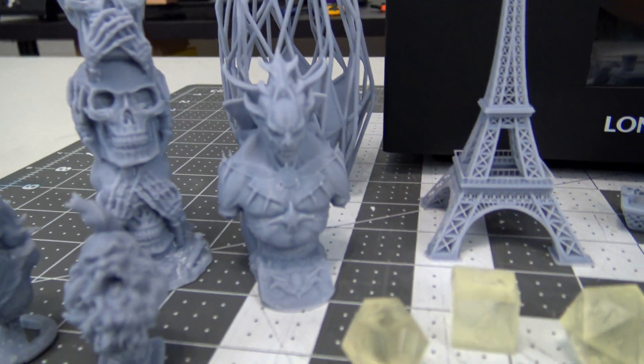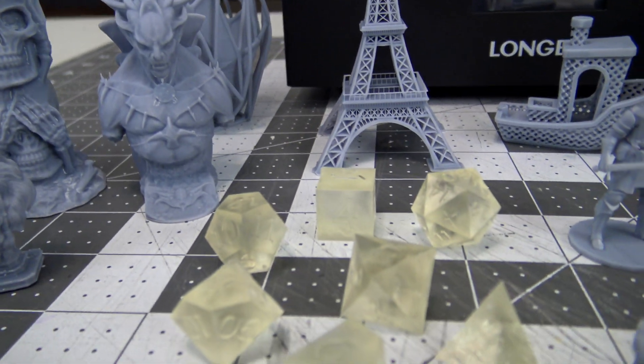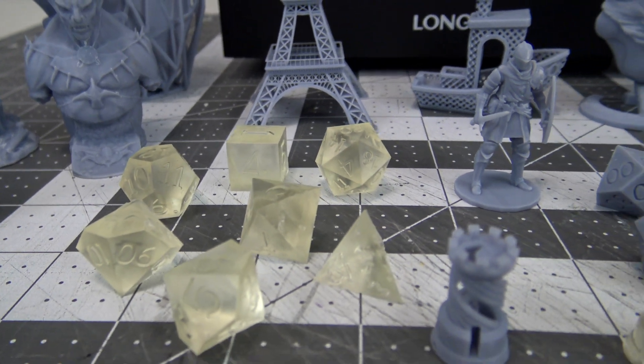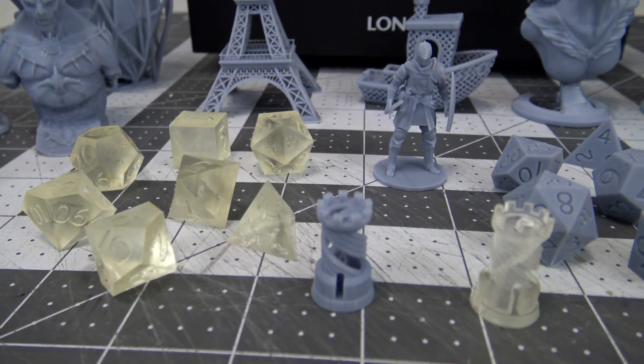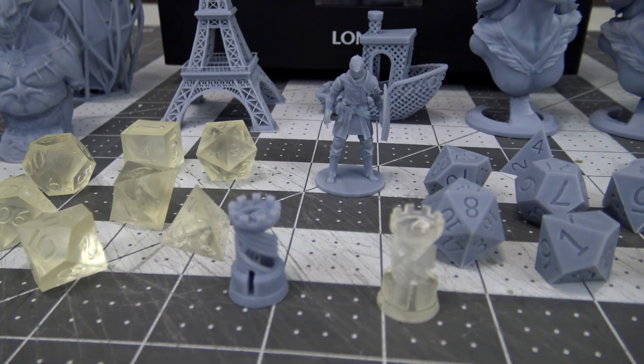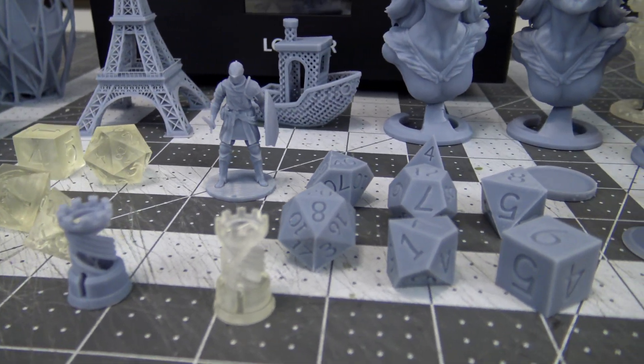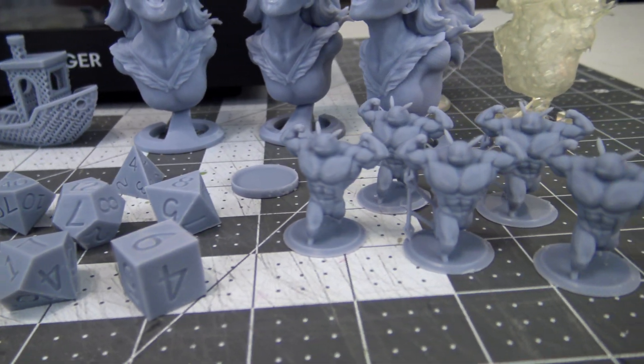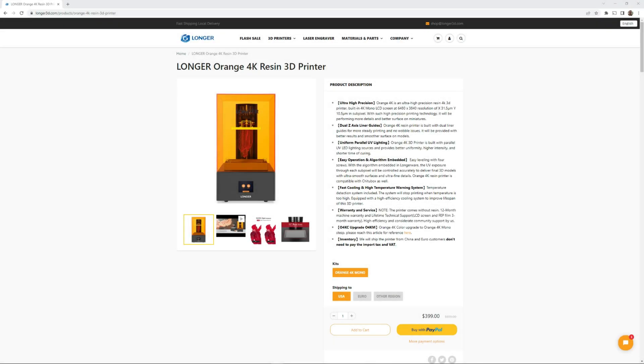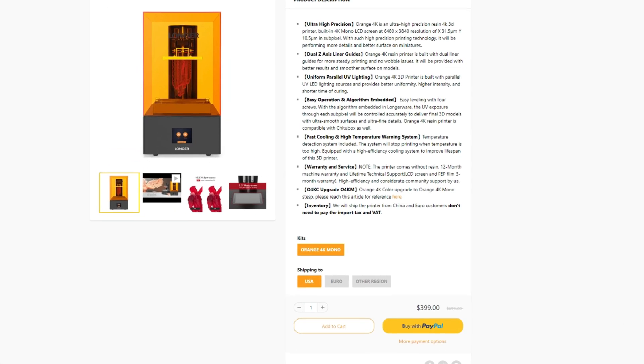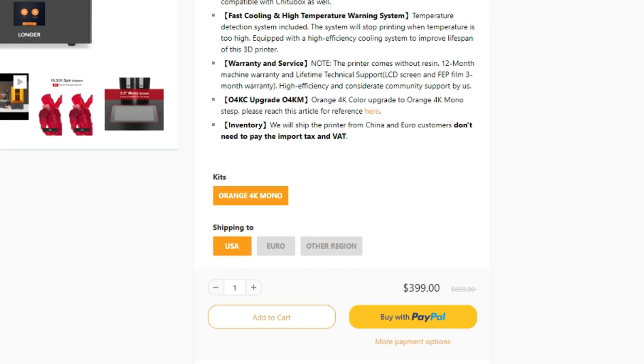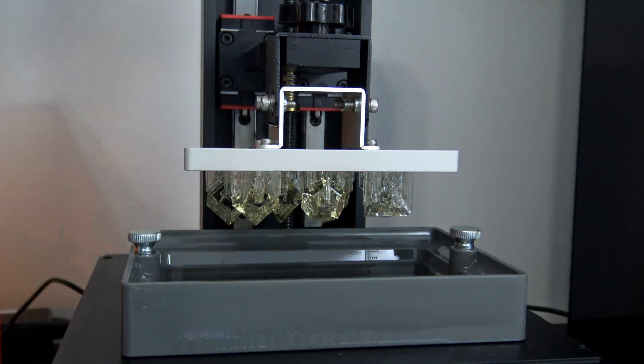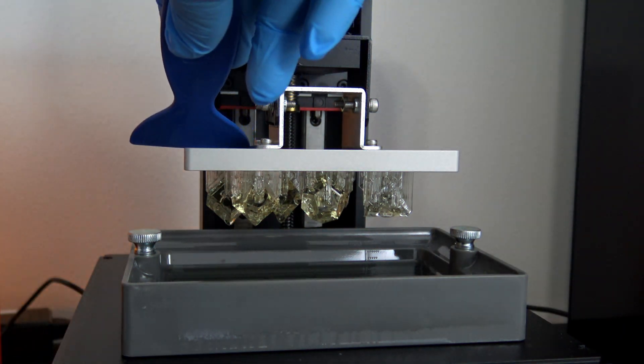Since the printer comes in two varieties, the color and the upgraded mono versions, I would recommend picking up the mono version. It's faster and more detailed, and seems to be more widely available. Longer also sells replacement parts, including the LCD screen, so it should be easy to maintain in the future. The Longer Orange 4K mono launched with an MSRP of $529 USD, but I am seeing frequent sales around the $400 USD price. At those prices, I can highly recommend this printer for those looking for high detailed 3D prints.